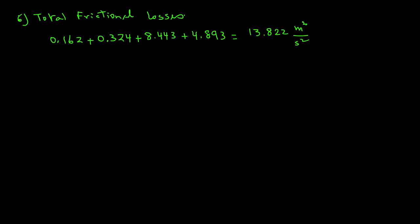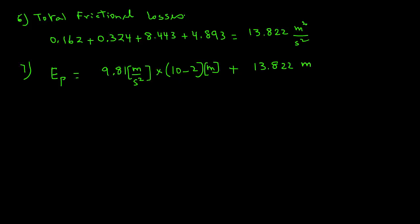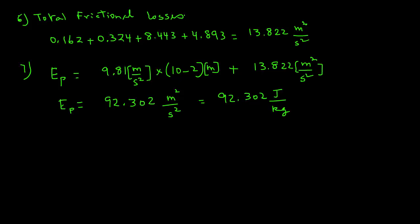The next step is to find the E_P value. E_P equals g × (Z2 − Z1) plus total frictional losses: 9.81 × (10 − 2) + 13.822 = 92.3 m²/s². Since m²/s² is equivalent to joules per kilogram, E_P = 92.302 J/kg.